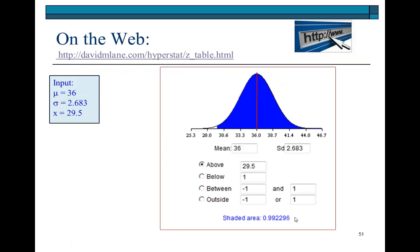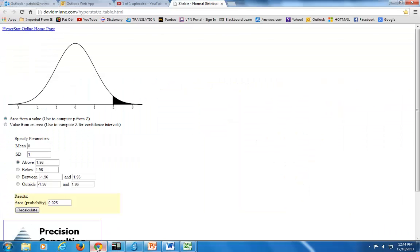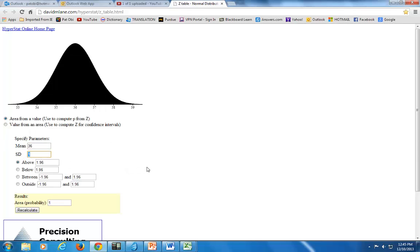Now, but for quickness and ease, we can also use this website. So, if we were to go there, the mean for this problem is 36, and the standard deviation of the binomial variable is 2.683. And we want the probability that x is 29.5 and above. Well, it is 30 and above, but remember, we're going to start from 29.5. So, let's go to above here and type 29.5.